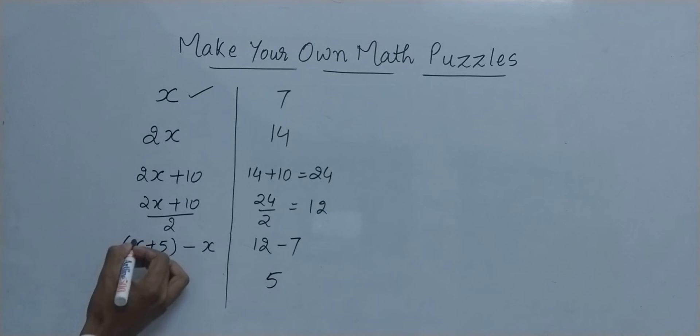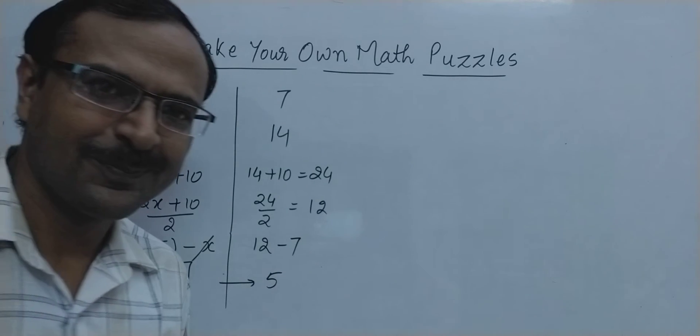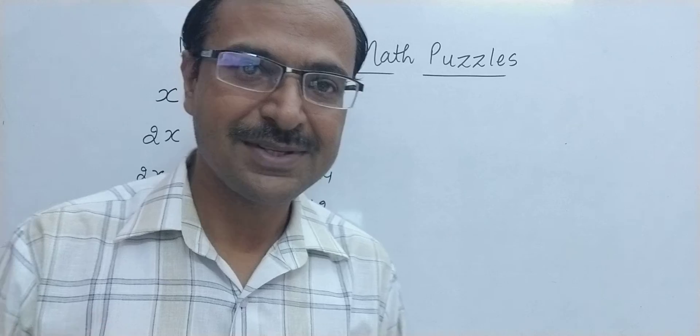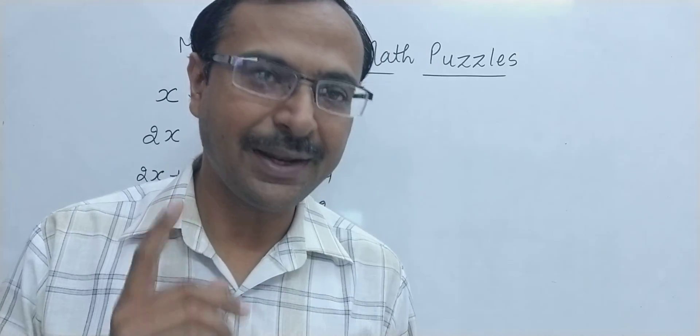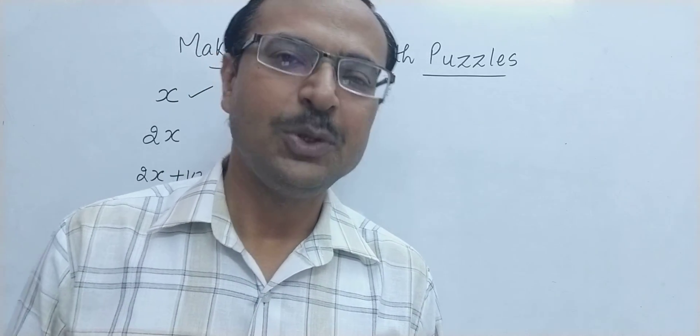And look at this. Irrespective of what he has selected, he will get a 5 every time. So you can tell him after this calculation that the number he has in his mind is 5. Isn't that amazing? Getting to 5 every time, starting with any random number x? Yes, you can do that.